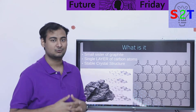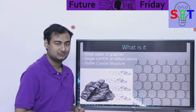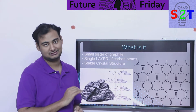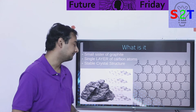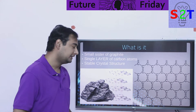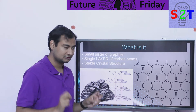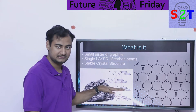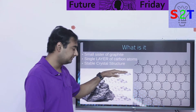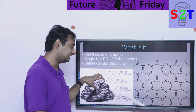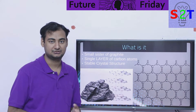First you have to understand what we are talking about. We are talking about a smaller cluster of graphite — the graphite that is used in your pencil tip. Graphite, if you are familiar with its crystal structure, has layers, and there is a weak bond between these layers.